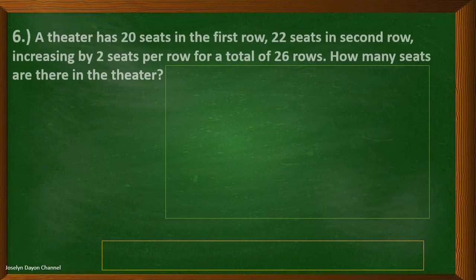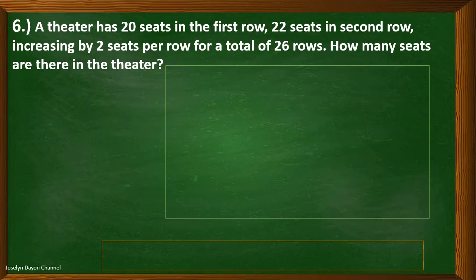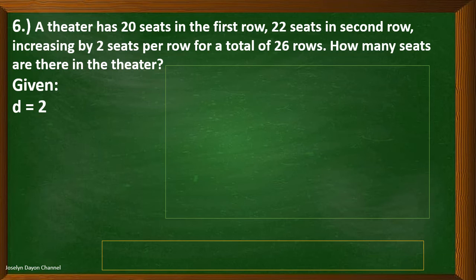Now let's have problem number 6. A theater has 20 seats in the first row, 22 seats in the second row, increasing by 2 seats per row for a total of 26 rows. How many seats are there in the theater? The common difference is 2 because every row increases by 2 seats, the first term is 20, and n is 26 since there are 26 rows.